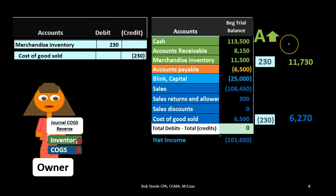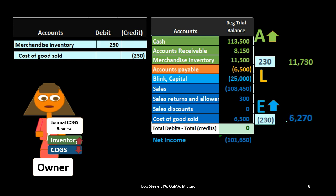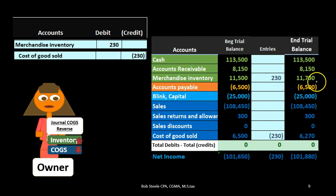The effect on the accounting equation: assets are increasing because we got the merchandise back, which is an asset. Liabilities remain the same. The equity section will be increasing — usually the most confusing component. Why is it increasing? Because cost of goods sold, an expense, is going down. Remember that net income is calculated as revenue minus expenses. Therefore, if the expense is going down, net income goes up. And total equity therefore also goes up. We can see net income going from $101,650 up by $230 to $101,880.